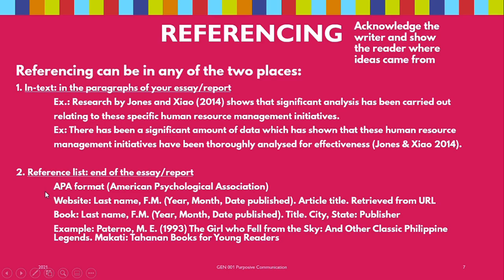That's the APA — American Psychological Association — format that we have to follow when we create reference lists. Everything you get and copy from the internet or from books, through proper quoting, paraphrasing, and summarizing, must have proper referencing. You can do that in-text or as a reference list. The examples given are in-text referencing, while reference lists are seen in researches and action plans, usually as the last page.